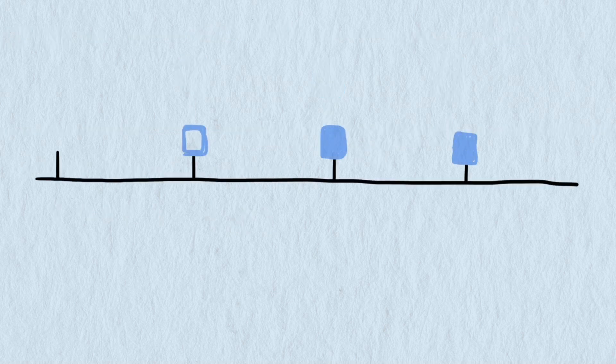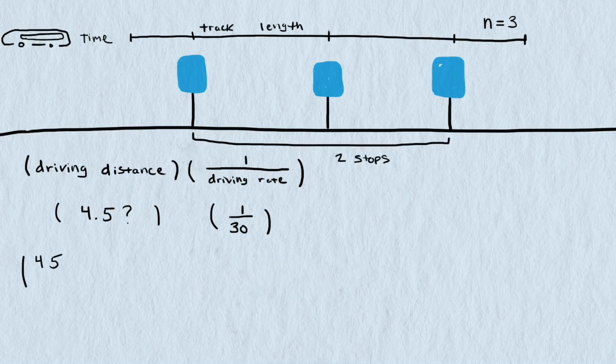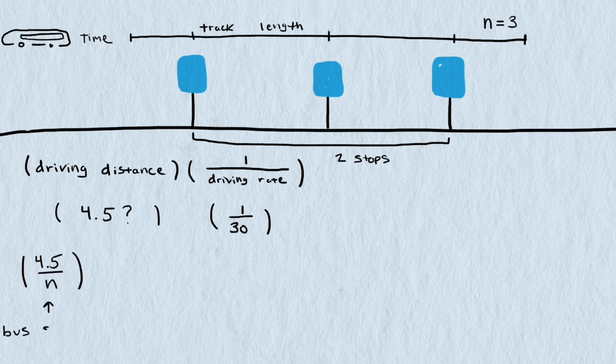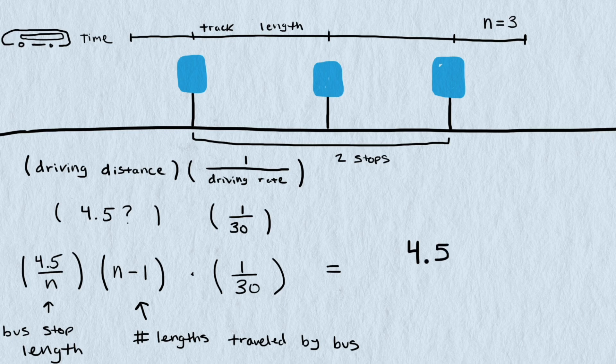If we had four stops, the bus would drive three sections of the road. The other section is walked by the passenger. So our driving distance is 4.5 divided by n, all multiplied by n minus 1, or it can be arranged to be 4.5 minus 4.5 divided by n. Either one works. Now divide by 30 miles an hour to get the driving time in hours.